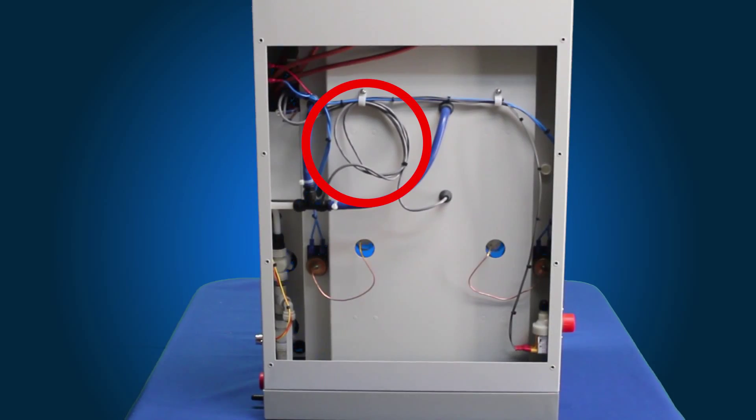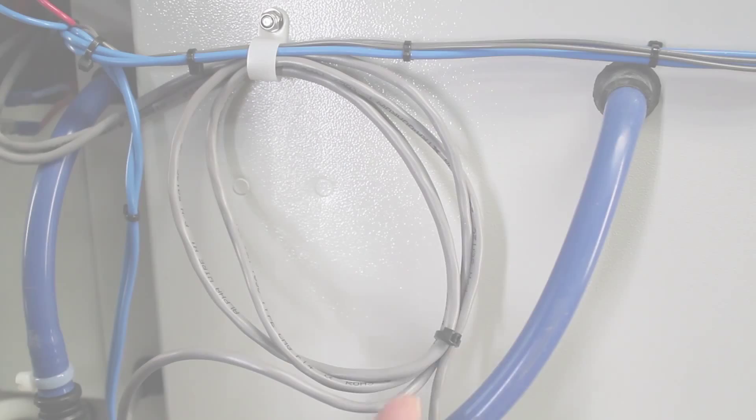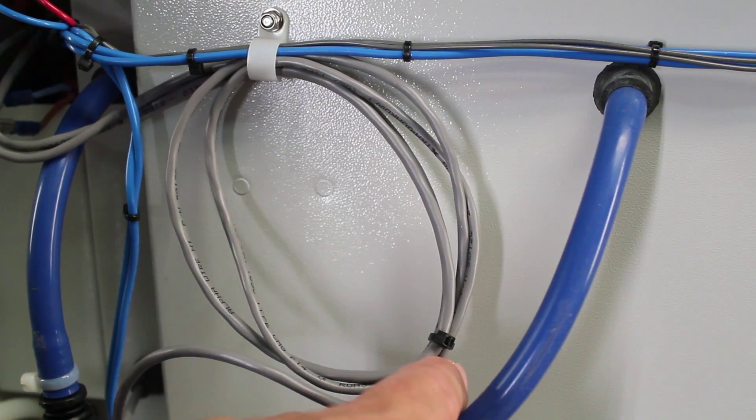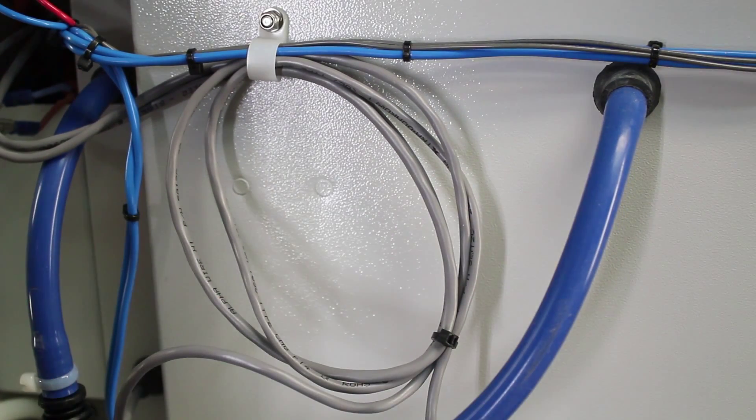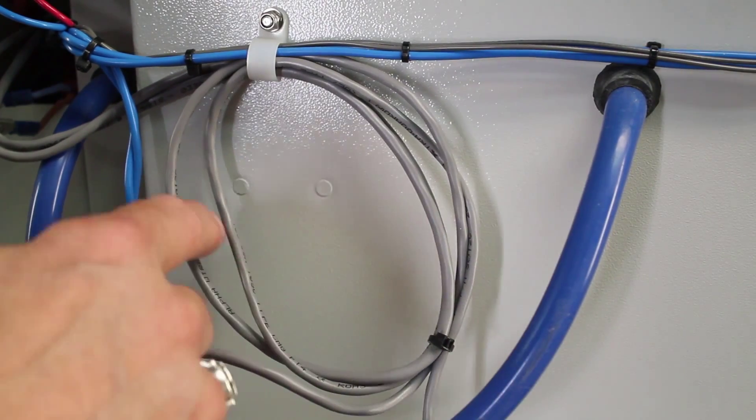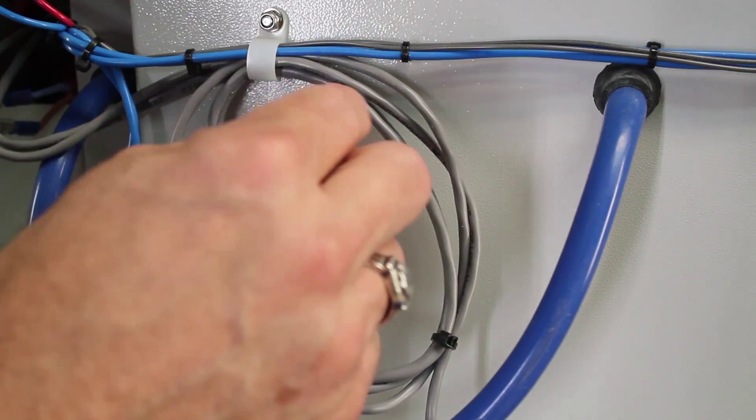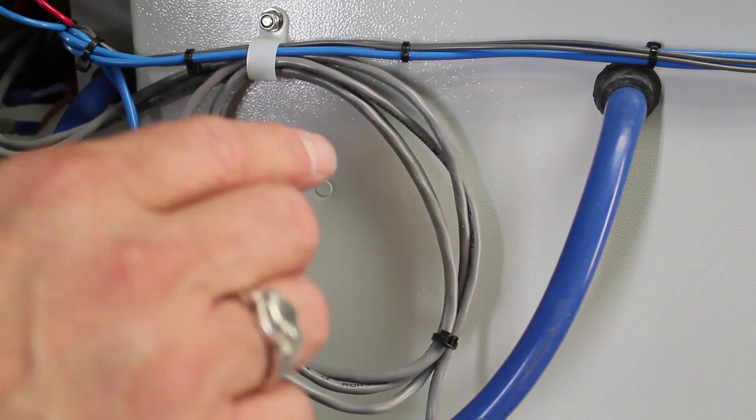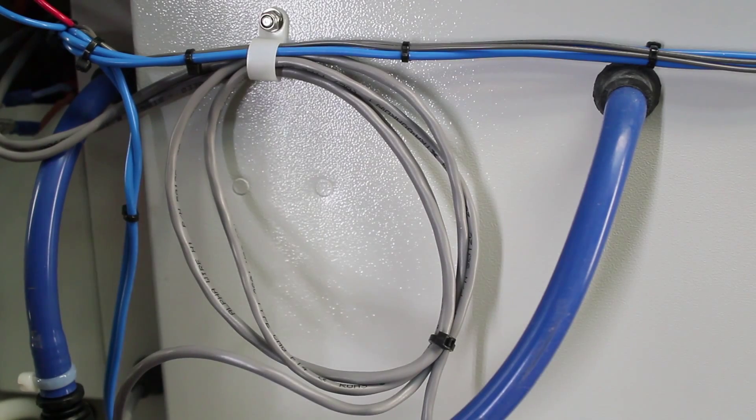Now that we have the thermistor removed from the glassware, which is the condenser level device, we're going to need to cut this cable tie to be able to pull the cable back through. We have it disconnected from the board, so we're going to go ahead and cut this cable tie. Once it's cut, you're going to route this cable through this eye hook out from the back of where the PC board is and then route it out back through the grommet.